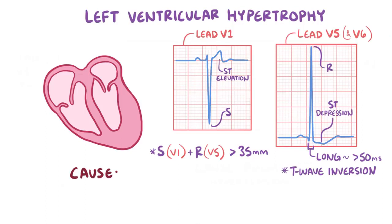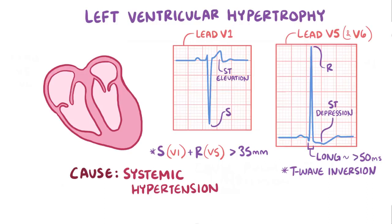Left ventricular hypertrophy commonly develops due to systemic hypertension, or elevated systemic blood pressure, since the left ventricle needs more muscle so that it can eject blood against higher pressures.